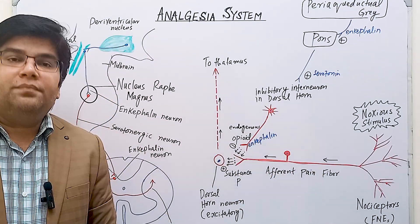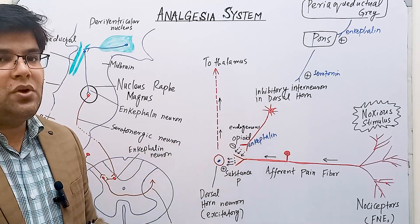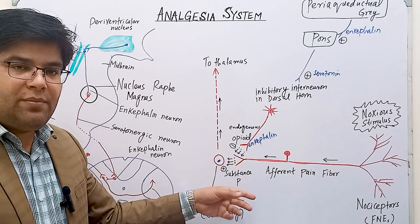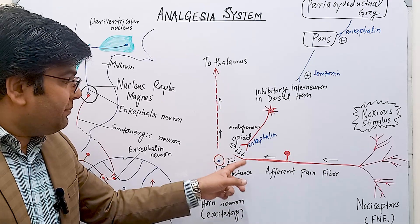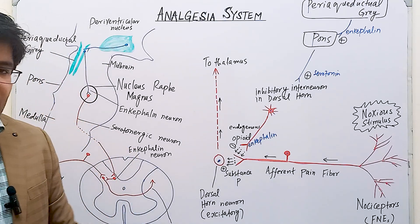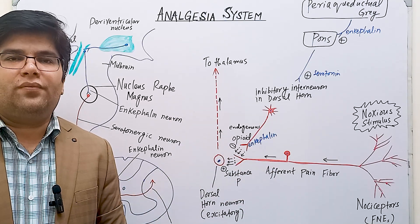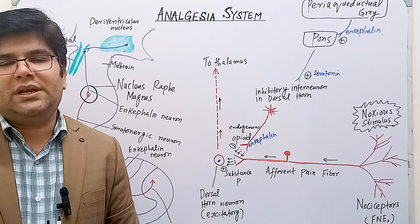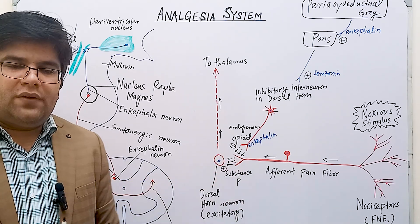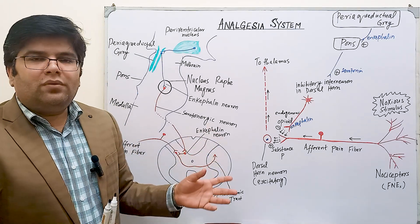Please keep in mind that enkephalin released by the inhibitory interneurons in the dorsal gray horn not only suppresses the presynaptic nerve fibers but also the postsynaptic nerve fibers. The effect on the presynaptic nerve fiber is decreased release of substance P, and the effect on the postsynaptic nerve fiber is production of an IPSP — inhibitory postsynaptic potential. In this way the inhibitory effect of enkephalin decreases pain signal transmission. There are different types of opioid receptors, but the most important is the mu receptor, present on the presynaptic and postsynaptic nerve fibers in the dorsal horn of the spinal cord.